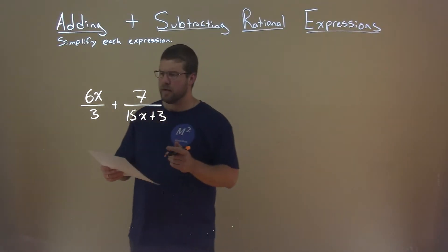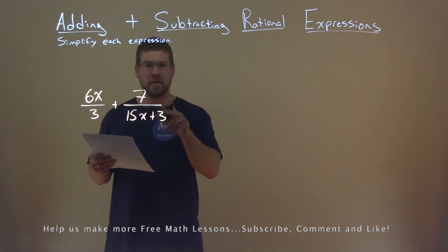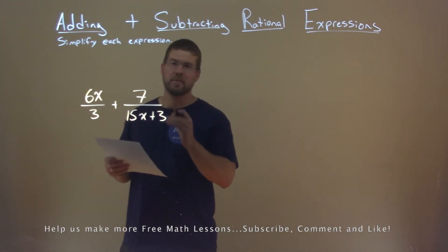We're given this problem right here: 6x divided by 3 plus 7 over 15x plus 3, and we need to simplify this expression.